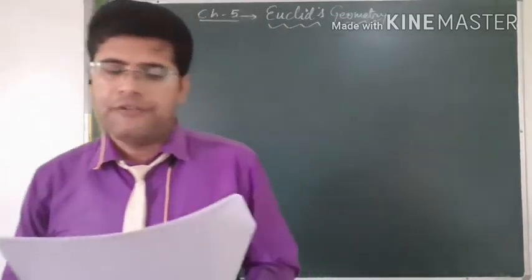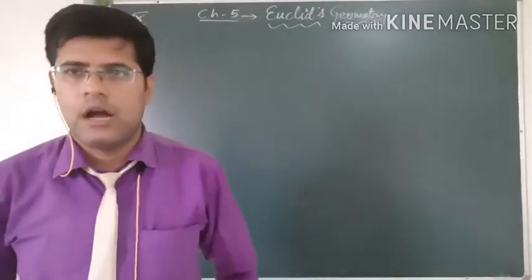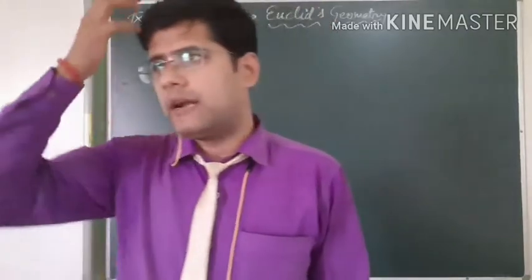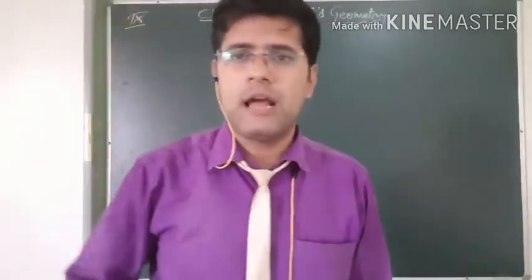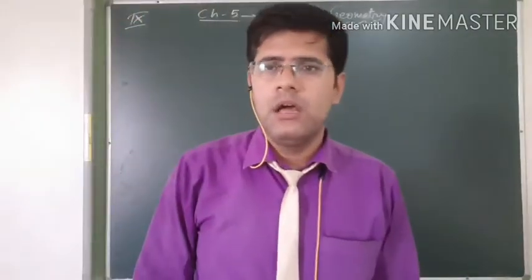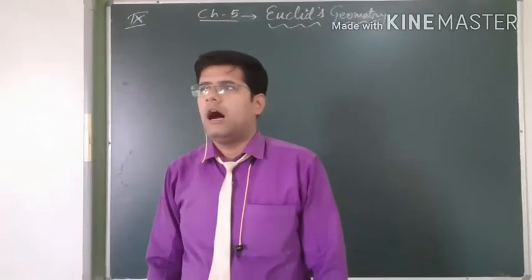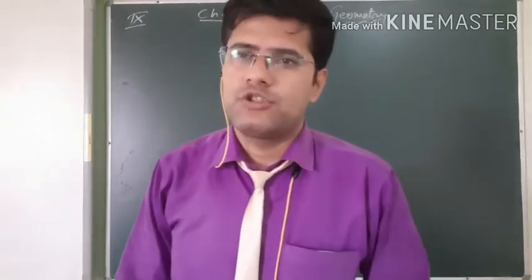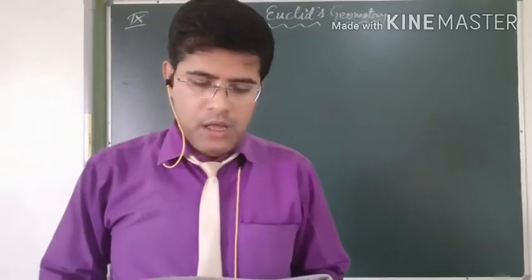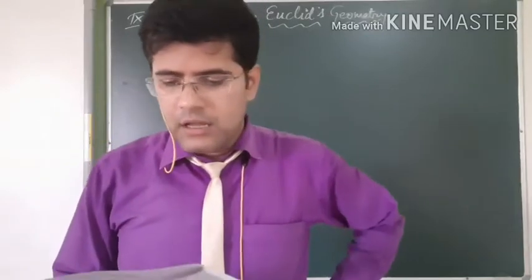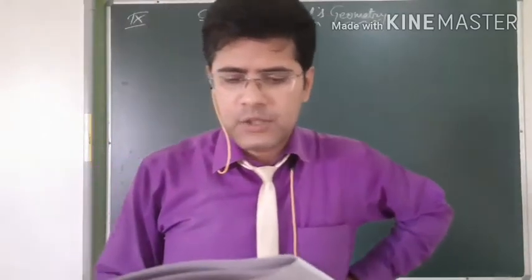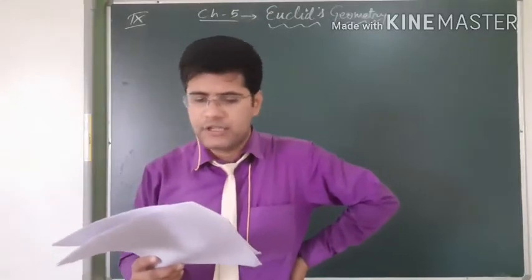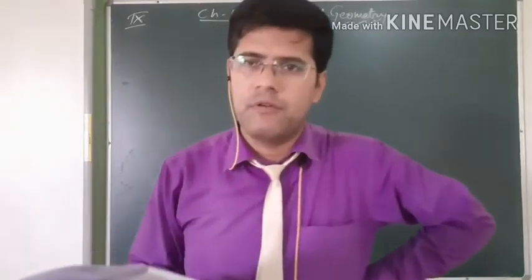Euclid gave a book named Elements. That book has 13 chapters and those chapters refer about geometric concepts. He exposed 23 definitions in book number 1 of Elements.